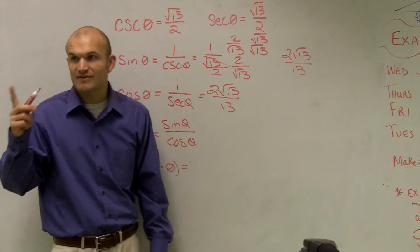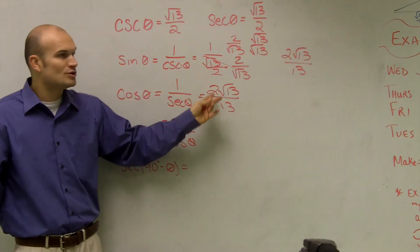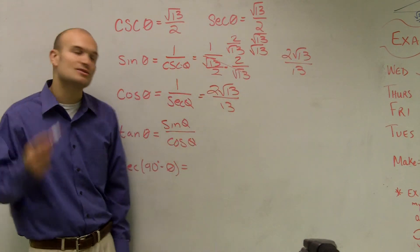Whenever I say 8 divided by 8, it's just going to be 1. So 2 radical 13 divided by 13 divided by 2 radical 13 divided by 13 is still just going to give us 1.